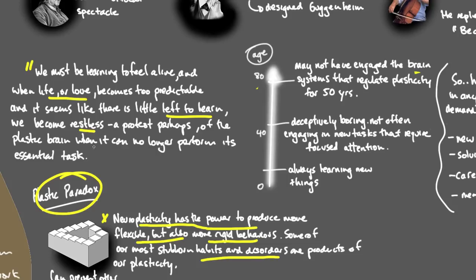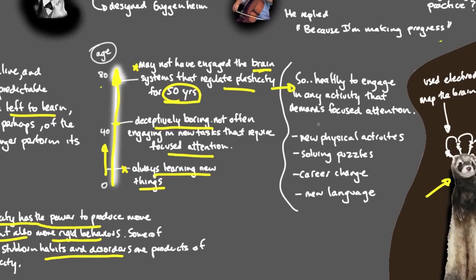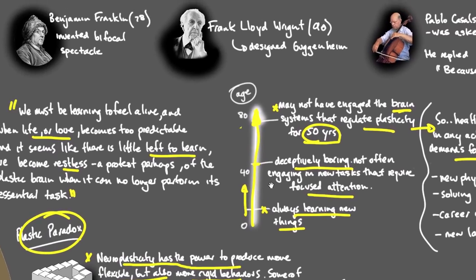To bring this to life, we look at a typical lifeline of 0 to 80. We've talked about the critical period when our nucleus basalis is turned on 24-7 and we're always learning new things. Then as we grow through teenage years and early 20s, 30s, we're trying new things, careers, relationships. Middle age can be deceptively boring. We're not often engaging in new tasks that require focused attention. If our expected life is up through to 80 years of age, we may not have engaged the brain systems that regulate plasticity for over 50 years. That's pretty incredible. What that tells us is that it's healthy at any age to engage in any activity that demands focused attention. Things like new physical activities, solving puzzles, career changes, new languages. These activities are brilliant any time, any age that you're at.